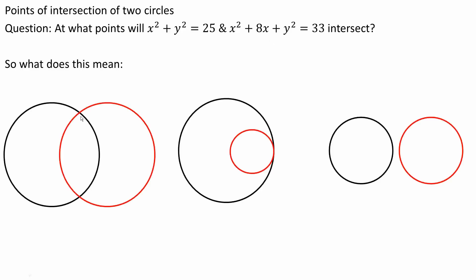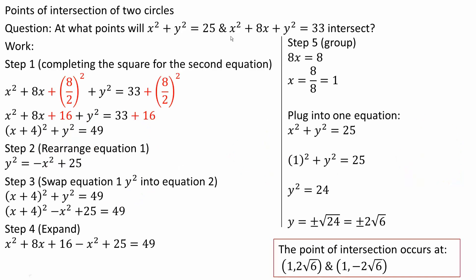Here's an example: this is one circle and this is another circle. We want to know at what points will this circle and this circle intersect. For one case it'll be at two points, for another case it'll be at one point right here, and for another case they won't intersect at all. So for this problem we want to know at what points, if any, will the two given circles intersect.